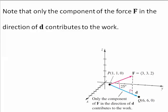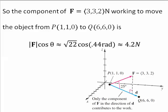Note that only the component of the force f in the direction of d contributes to the work. So the component of f working to move the object from P to Q is the magnitude of f times the cosine of the angle, which is about 4.2 newtons.